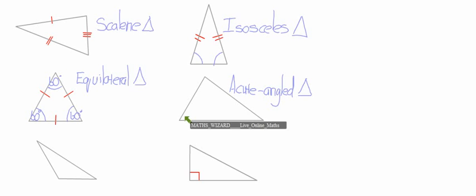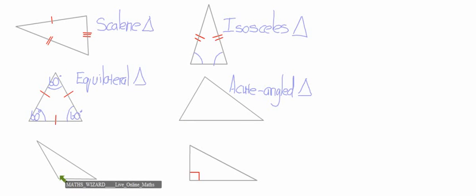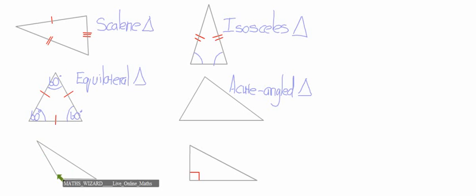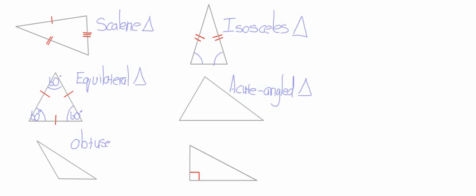That brings us to the next triangle. As you can see over here, we have one angle that is greater than 90 degrees. We call this triangle — where at least one of the angles is greater than 90 degrees — an obtuse-angled triangle, because one angle is obtuse.